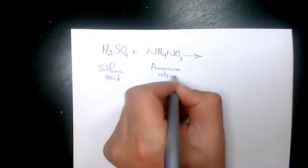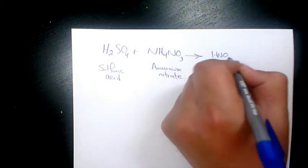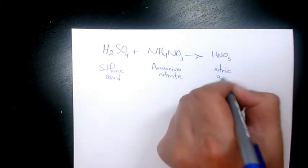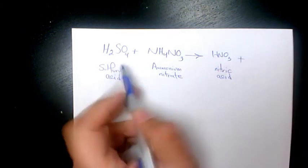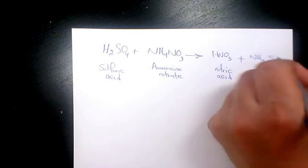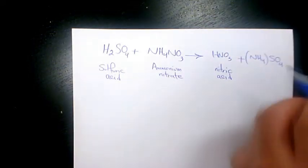The product is going to be HNO3 which is nitric acid, and on the other hand we have (NH4)2SO4. Since SO4 is 2, I'm going to write (NH4)2SO4. Now we need to balance it.